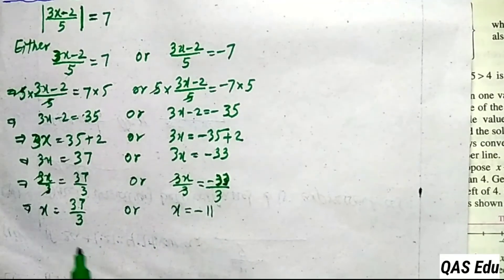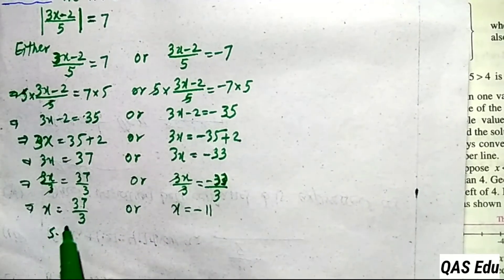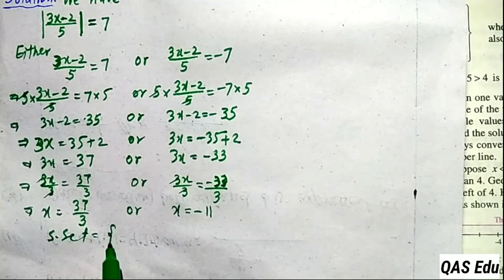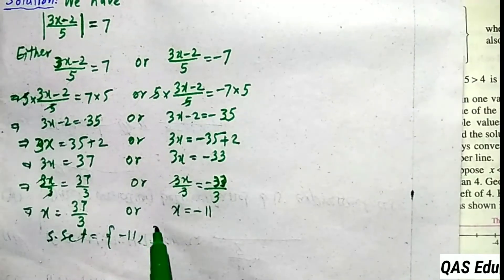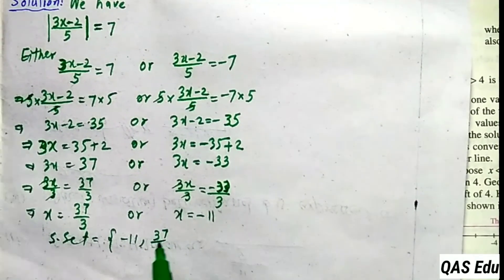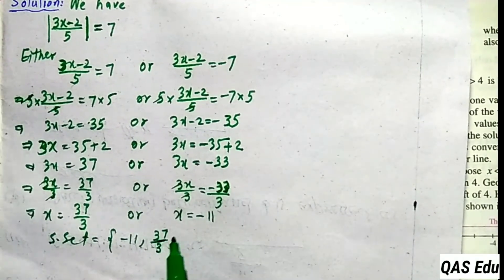The solution set has two numbers: minus 11 and 37 divided by 3.